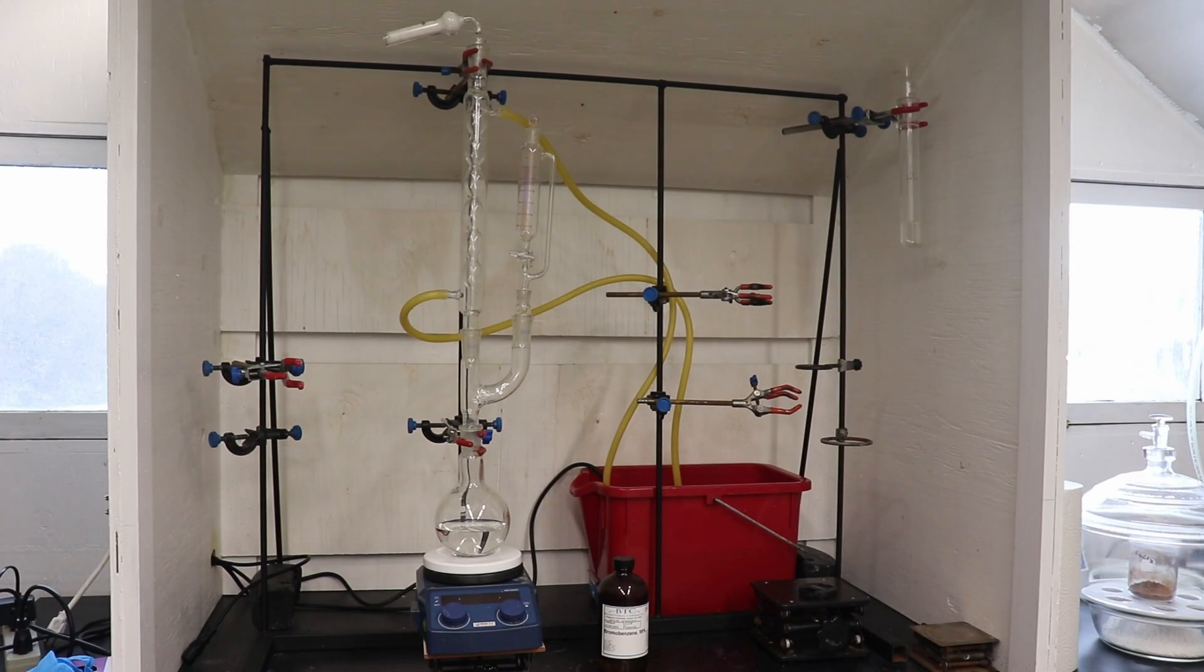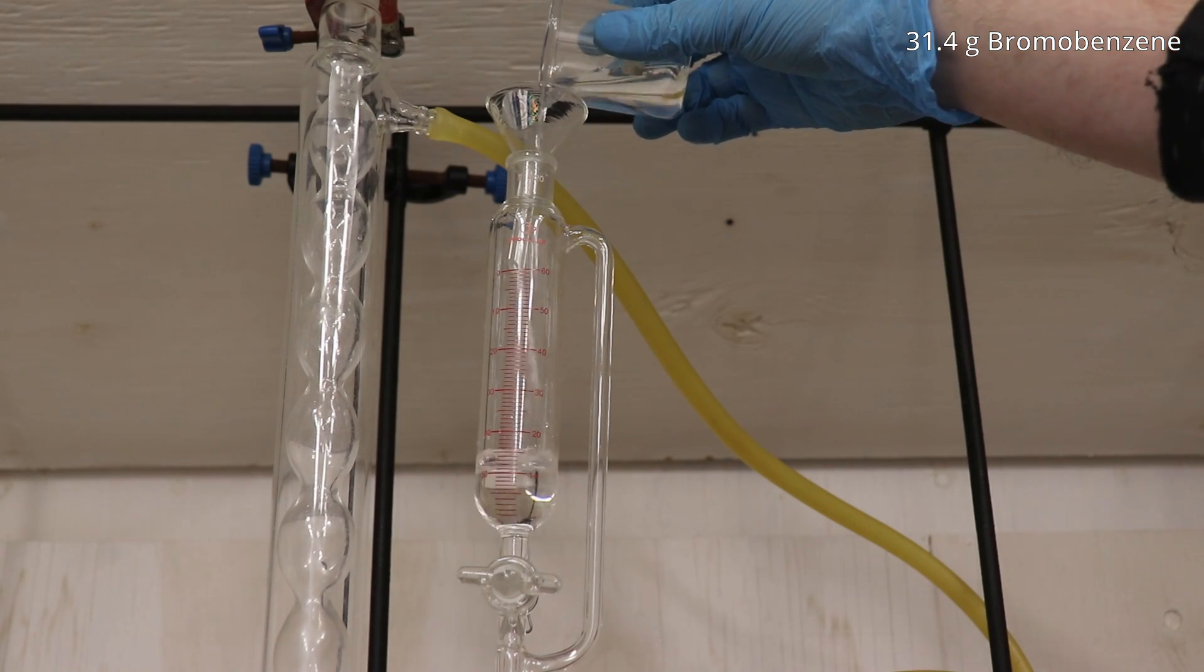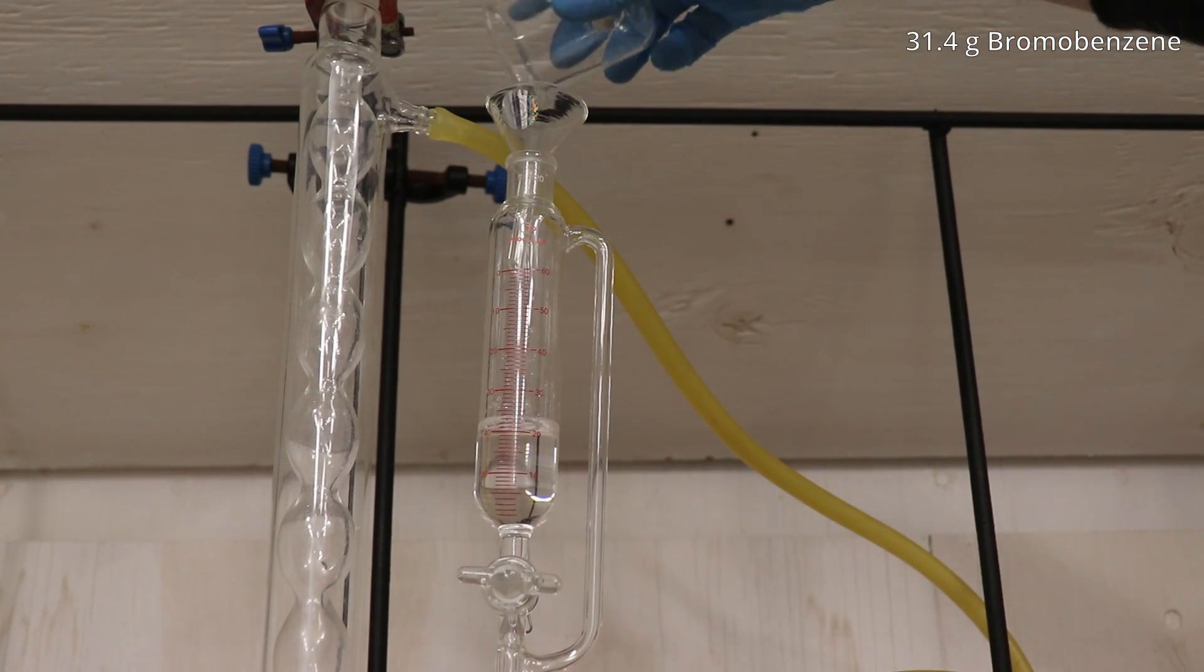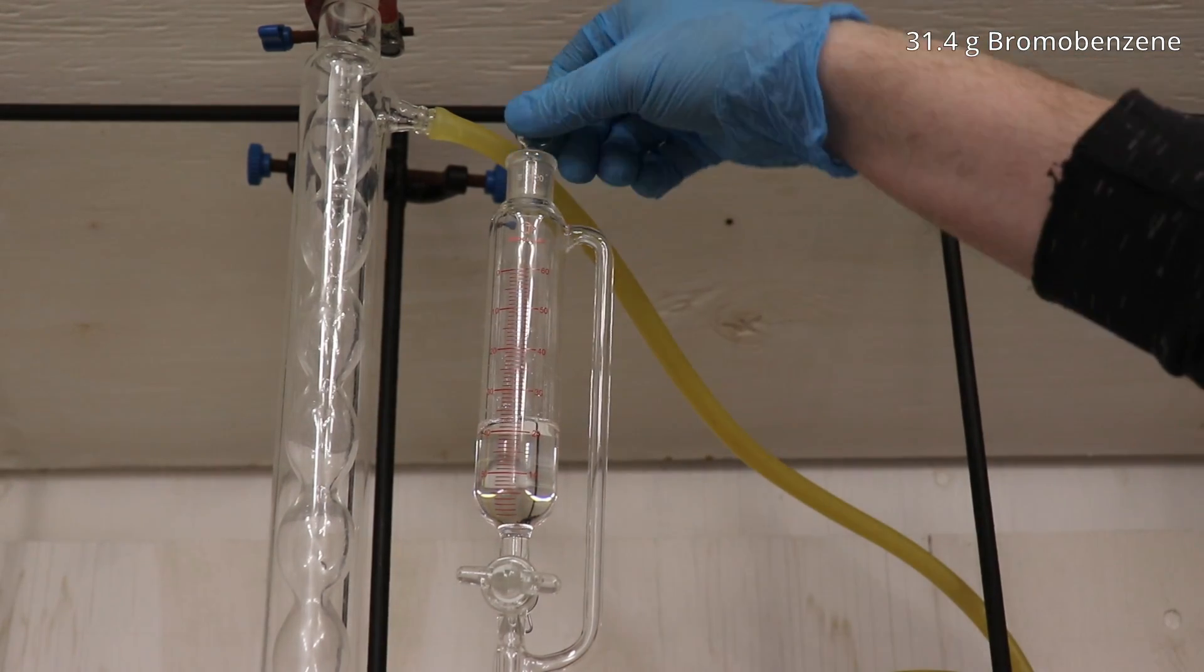And here's the whole setup for the preparation of the Grignard reagent. Note the calcium chloride drying tube which prevents the ingress of atmospheric moisture which would otherwise destroy our phenyl magnesium bromide. The addition funnel was charged with 31.4 grams of bromobenzene, then a few mils of the bromobenzene was allowed to run into the flask to begin the formation of our Grignard reagent.